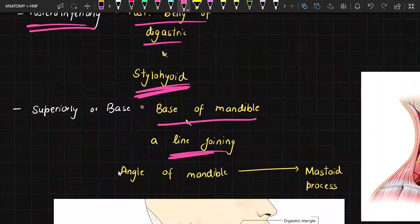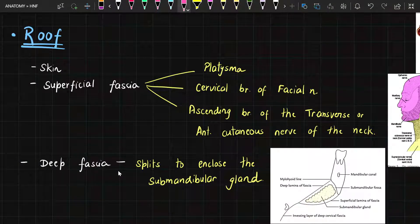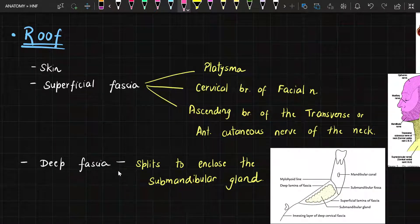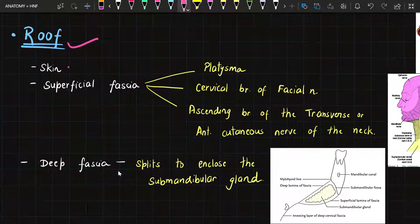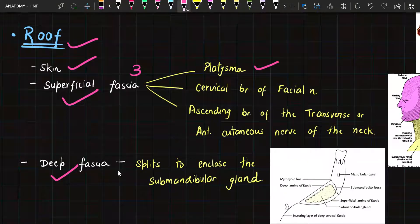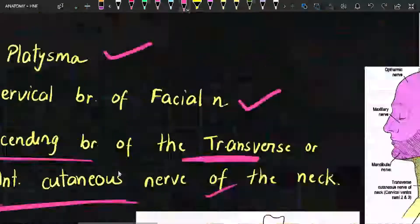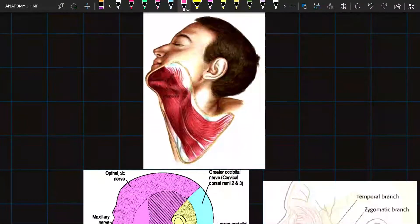This triangle is externally covered by a roof and has certain contents. Going from outside to inside, first we have the skin, then the superficial fascia, then the deep fascia. In the superficial fascia we have three things: the platysma muscle, the cervical branch of the facial nerve, and the ascending branch of the transverse anterior cutaneous nerve of the neck.